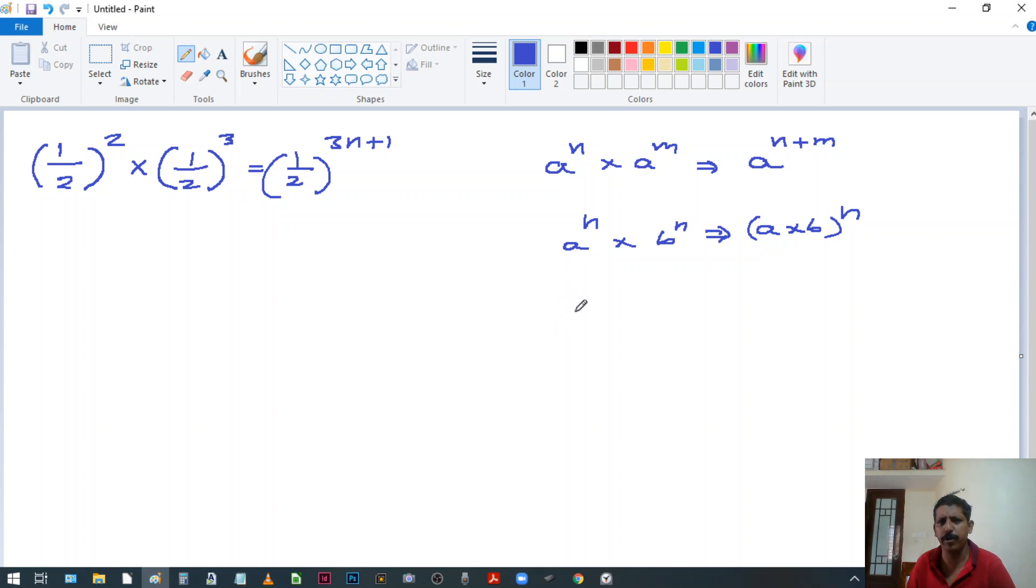If you want to, I want to give you an example. 2 raised to 2 multiplied by 2 raised to 3, since the bases are same, say 2 raised to 2 plus 3, that is 2 raised to 5. If the bases are different, then what do you do? 2 raised to 2 and 3 raised to 2. Both the powers are same.